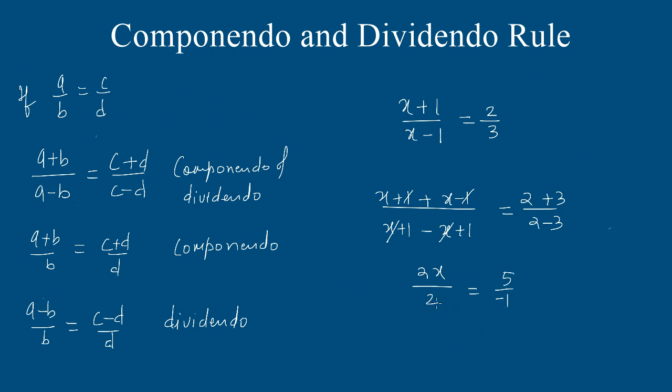2 cancels on both sides, so x value comes out to be equal to minus 5. If we want to solve directly by cross multiplication instead of componendo and dividendo, we get 3x + 3 equals 2x - 2. Solving this, 3x - 2x equals -2 - 3, and we get x equals minus 5.